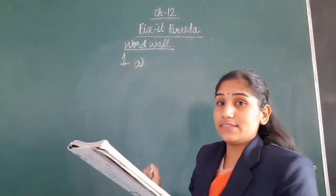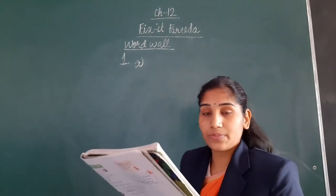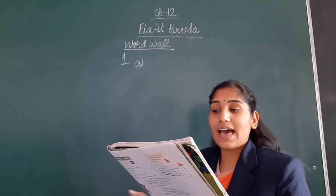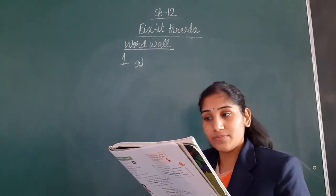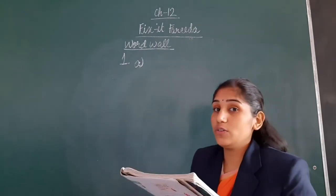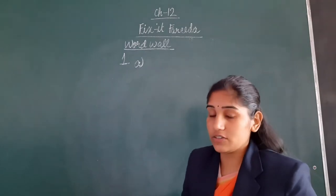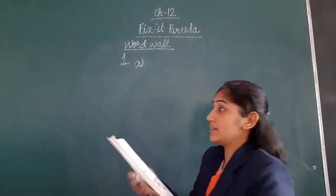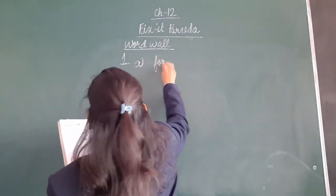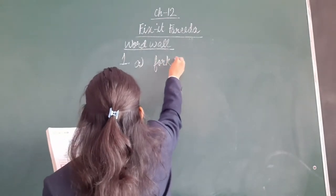We can see a saw, nails, hammer, and a fork. We use our fork in the kitchen to eat. So the 4th is the odd one. Circle the 4th.